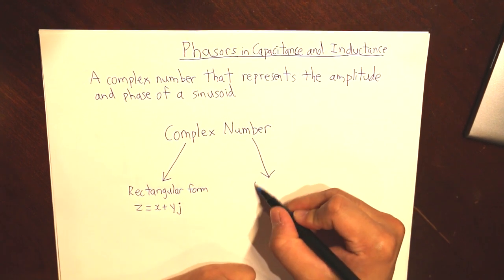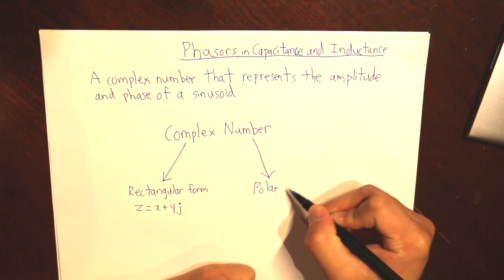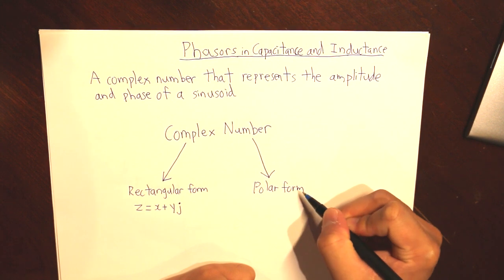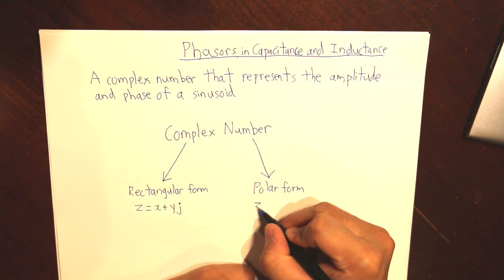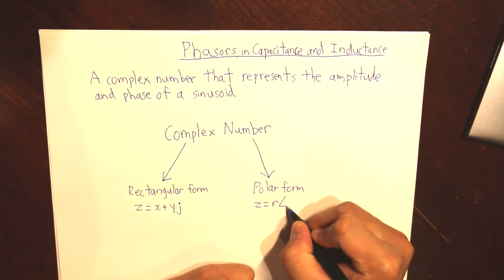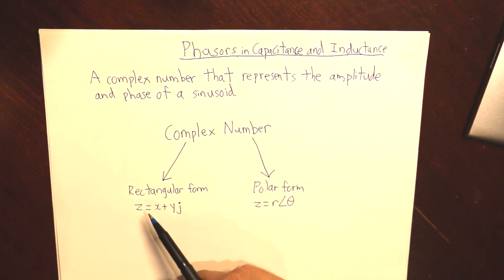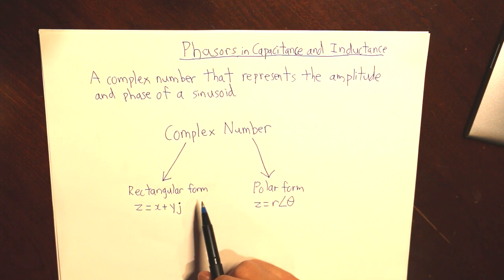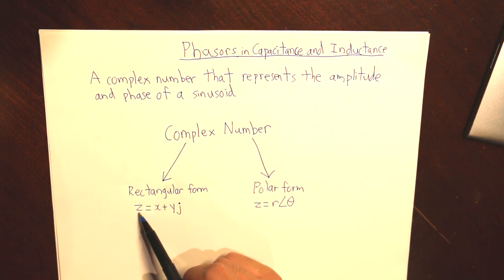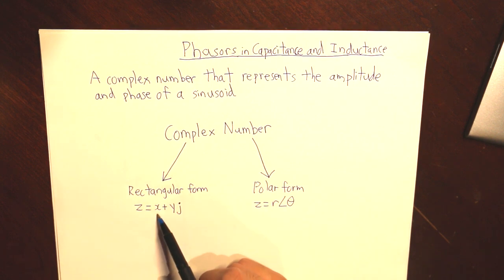And the second form is the polar form, denoted as Z equals R angle theta. So for the rectangular form, this is what we're going to be focusing on to calculate our circuit element. The Z is simply the impedance that we need to find. X is the real value, and YJ is the imaginary value.